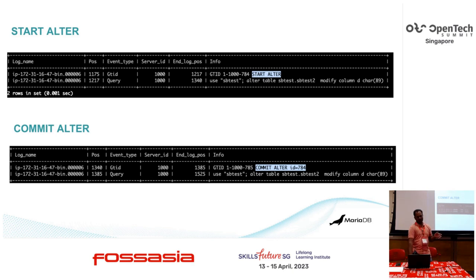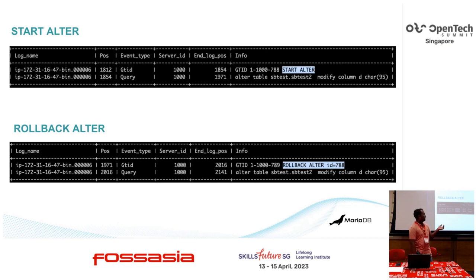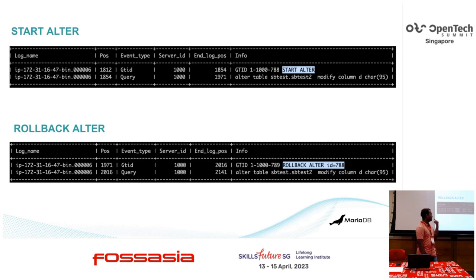When you are executing the alter command on the master and you cancel it or it fails, there will be a rollback event. You will get a start alter command and it will start the alter on the slave. Once you receive a signal from the master that it failed or got cancelled, immediately in the master binary logs you will get a rollback event. That rollback event will be sent to the slave and the alter will be rolled back. All these steps will be done in the background without the users knowing.